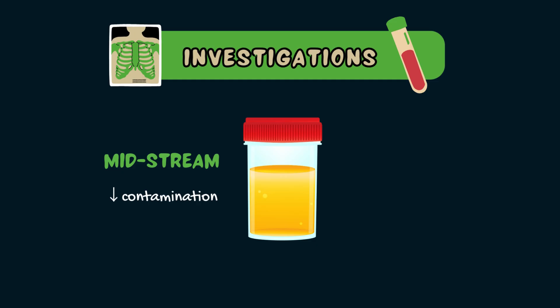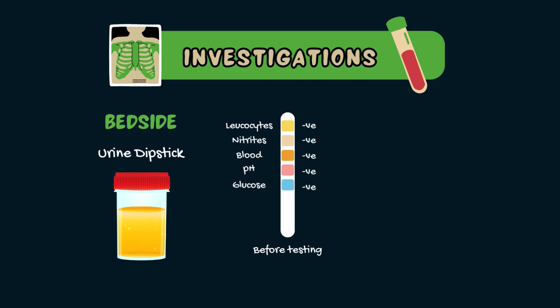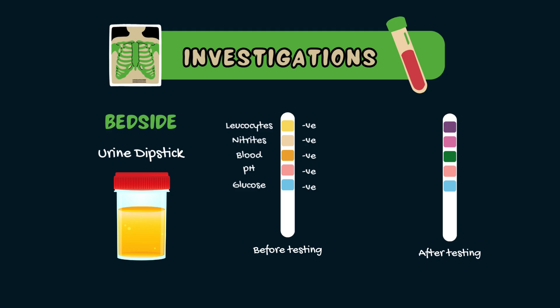The first and easiest test is a urine dipstick test — a rapid bedside test that uses a plastic strip with multiple chemical pads dipped into the urine. Each pad reacts with specific components in the urine, changing colour based on their concentration. After dipping the strip, wait about 30 to 60 seconds, then compare it to the colour chart on the manufacturer's bottle. In a urinary tract infection, leukocyte esterase will be positive, indicating that an infection is present. Nitrites will also be positive, as bacteria such as E. coli convert nitrates into nitrites. You may also see erythrocytes, or red blood cells, present from trauma to the urinary tract caused by the infection.